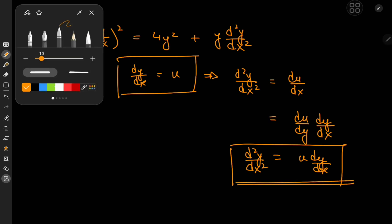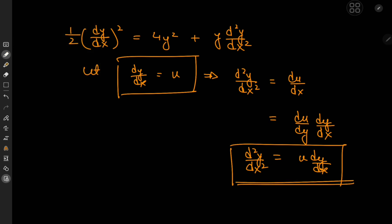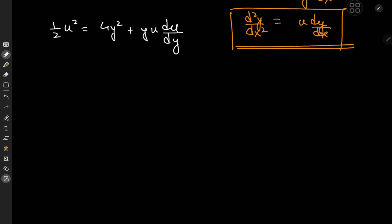With these substitutions in place, our differential equation translates to: one half of u squared equals 4y squared plus y times u du/dy. Rearranging, we write this as yu du/dy plus 4y squared minus one half of u squared, all set equal to zero.